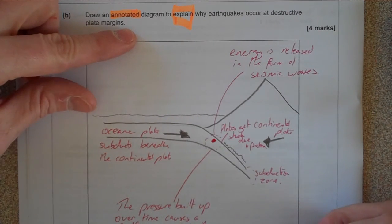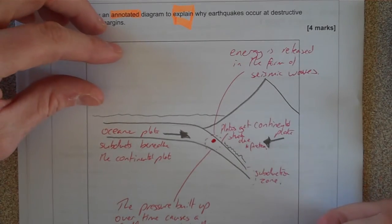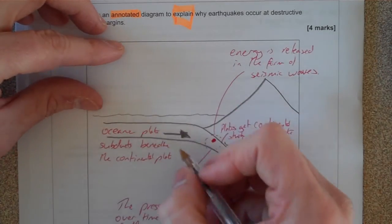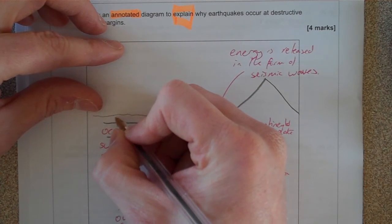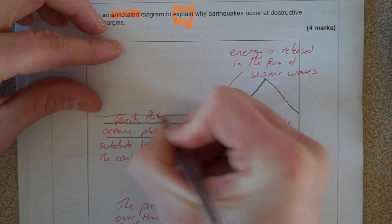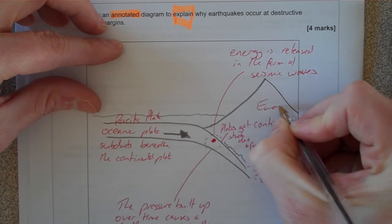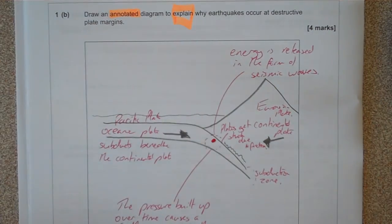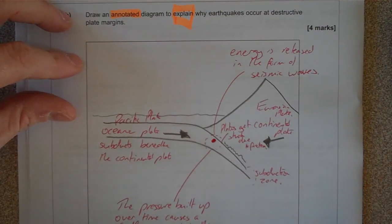The only thing to add, if I was wanting to show off, would be a place where this is occurring. And we could say this is occurring between the Pacific plate and the Eurasian plate because this is what happened in the Asian tsunami, the Japanese tsunami, 2011.